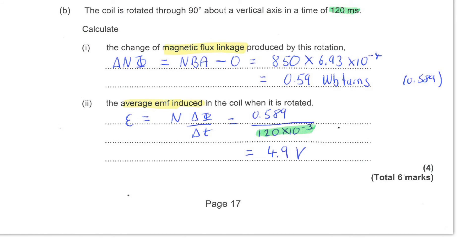So the flux linkage in the previous part of the question is the flux multiplied by the number of turns. Now, that is what we have worked out here, 850 multiplied by your previous answer.